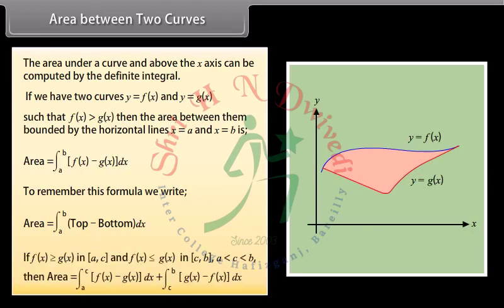If f(x) ≥ g(x) in [a, c] and f(x) ≤ g(x) in [c, b], where a < c < b, then the area is equal to ∫[a to c] [f(x) − g(x)] dx plus ∫[c to b] [g(x) − f(x)] dx.